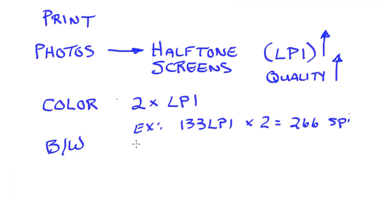In the case of a black and white photograph, negative, we would be going one and a half times the LPI of the halftone screen that's going to be used. Alright, so for print, using halftones, the color is two times the LPI. For black and white, it's one and a half times the LPI.